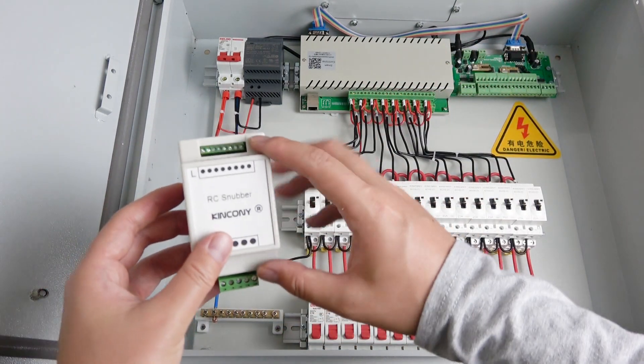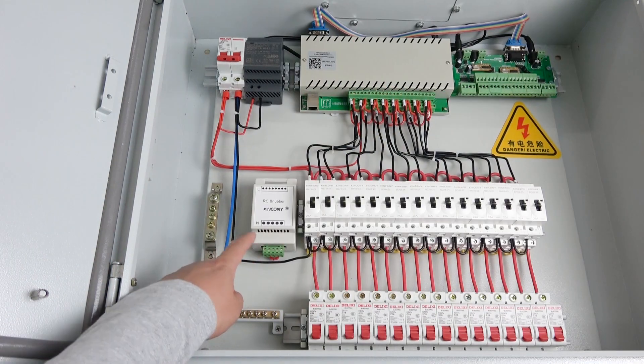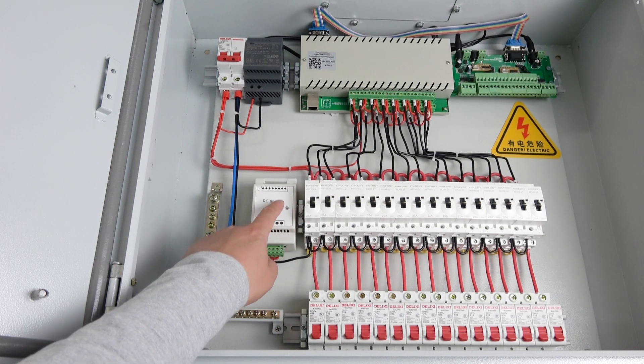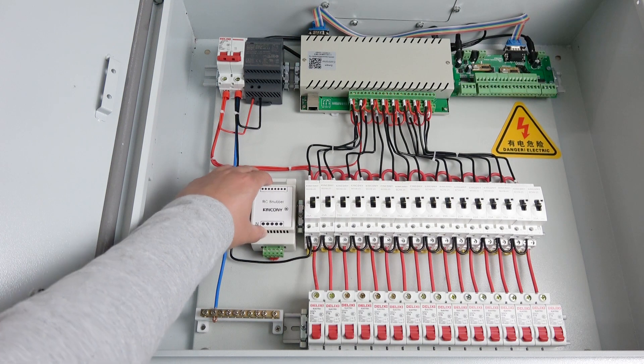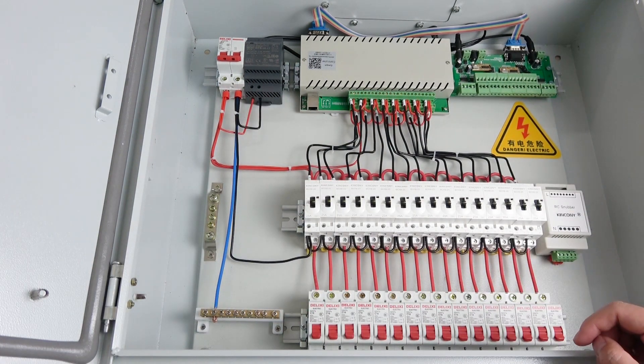So you can just install on the DIN rail, just like this. Because this is 16 channel, so you can use two pieces of this RC snub. Install on this, or install on this position. There is no problem.